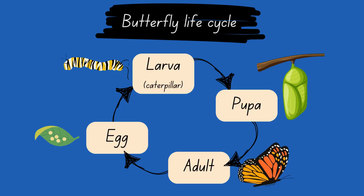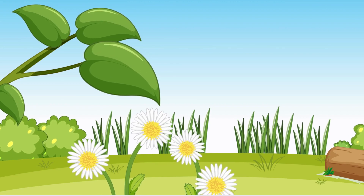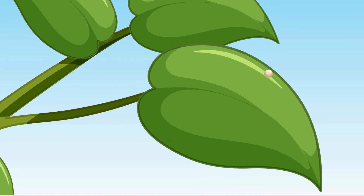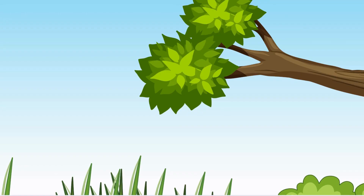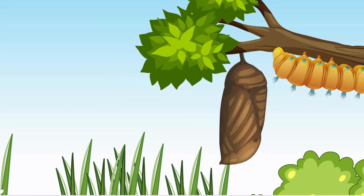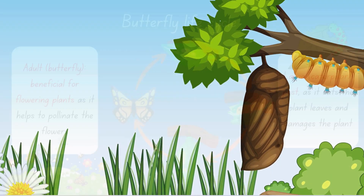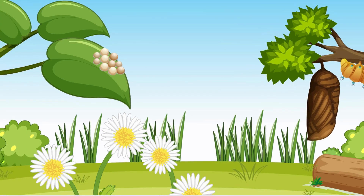Let's talk about butterflies. A butterfly has a four-stage life cycle. A butterfly lays its eggs on the underside of a leaf so the young can feed on the leaves when they hatch. It's hidden underneath to stop predators from eating the eggs — that's clever! The butterfly is a pest when it's a larva, as the caterpillar eats leaves and stops plants from growing.